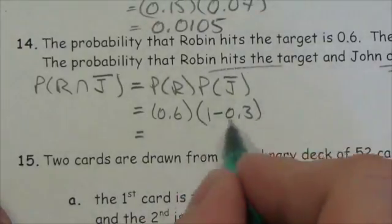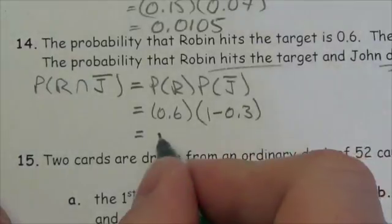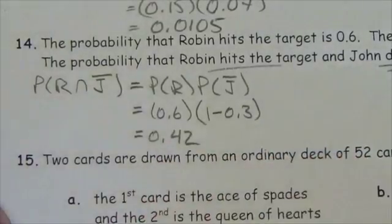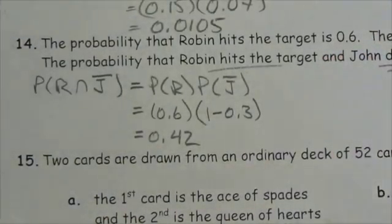So probability that he gets it is 0.3, probability that he misses would be 1 minus 0.3 or 0.7, and when you multiply those together, the probability is 0.42 that Robin hits it and at the same time John doesn't hit it.